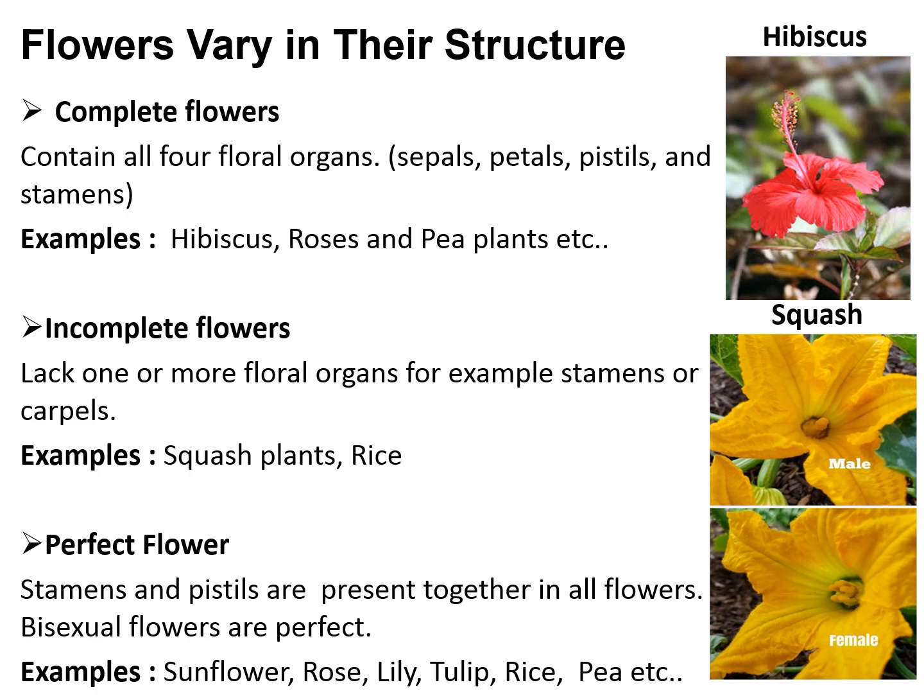Examples of complete flowers include hibiscus, roses, pea plant, and many more. Incomplete flowers are those that lack one or more of these sets, for example stamens or carpel. An example of an incomplete flower is the squash plant. Perfect flowers are those that contain stamens and pistils together, and these flowers are also called bisexual flowers. All complete flowers are also perfect flowers. Examples of perfect flowers are sunflower, roses, lily, tulip, and pea.